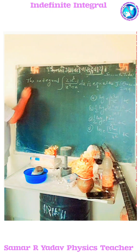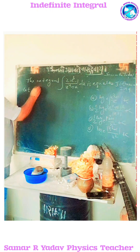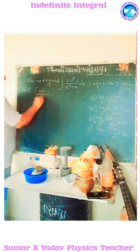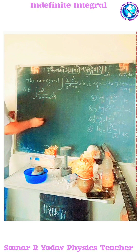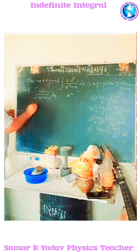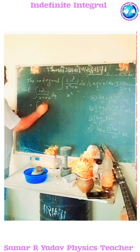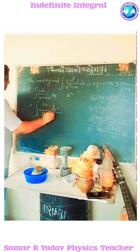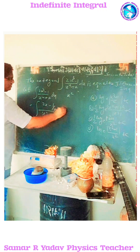Let I = ∫ (2x³ - 1) / (x⁴ + x) dx. The numerator and denominator are divided by x², giving us ∫ (2x - 1/x²) / (x² + 1/x) dx.